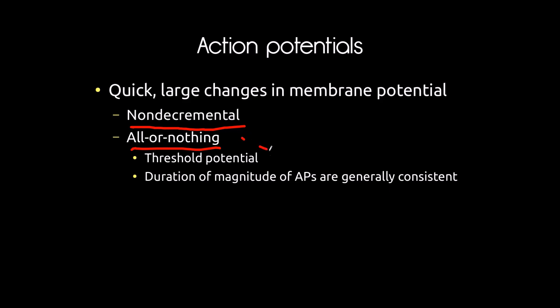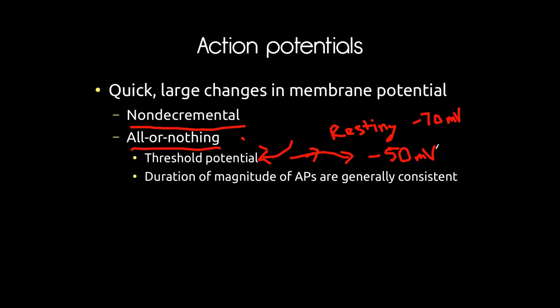An action potential will happen when the cell membrane reaches threshold potential. The resting potential is around negative 70 millivolts, and threshold potential is usually around negative 50 millivolts. If the membrane potential in an area of a neuron reaches about negative 50 millivolts, it will undergo an action potential. The duration and magnitude of action potentials are very consistent — it's all or nothing, always the same size.